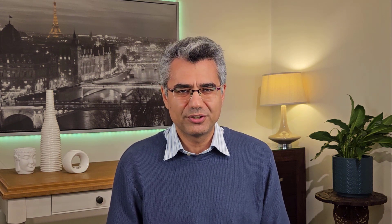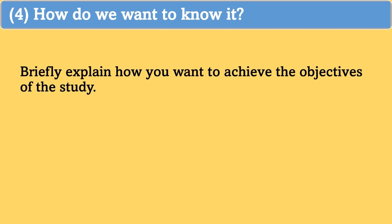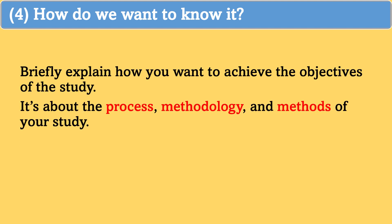By the way, when we talk about the importance of this study, it doesn't mean that we need to do something world-changing. Your research problem might be something simple, but it needs to be researchable, feasible, and clearly address a relevant issue in your field. And finally, number four: how do we want to know it? In this part, briefly explain how you want to achieve the objectives of the study. So it's about the process, methodology, and methods of your study.